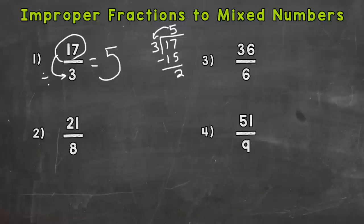So whenever there is a remainder, it's the numerator portion of the fractional part of the mixed number. So we put our 2, our remainder, up here. And then we keep the denominator the same. You don't need to change it. So we get 5 and 2 thirds.